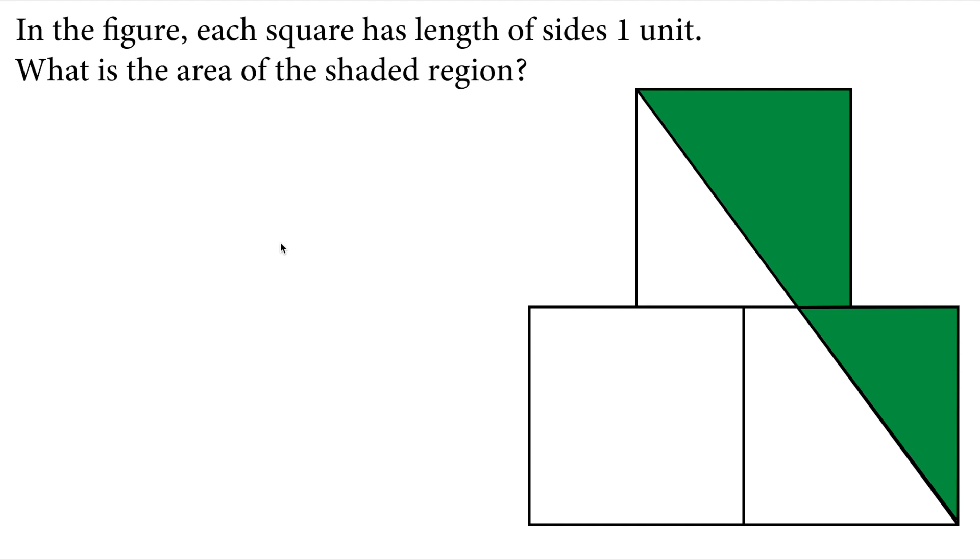Hi there, in this video we will solve this math olympiad question. Let's read the question. In the figure, each square has length of sides one unit. What is the area of the shaded region? The shaded region has one triangle, the green triangle, and one trapezoid in this upper square.